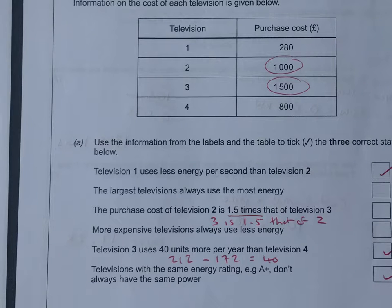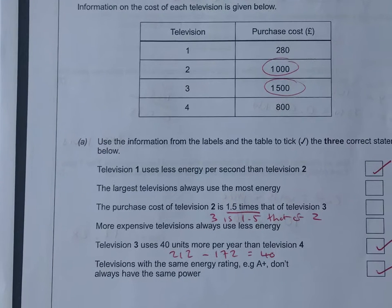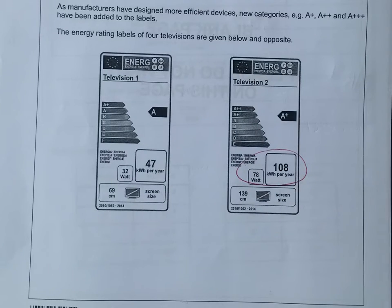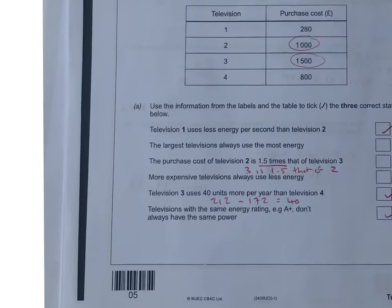Your first question for three marks needs three ticks, but there's a lot going on, so we'll work through this. Television one uses less energy per second than television two, so it's about recognizing less energy per second. Joules per second is the same as a watt.